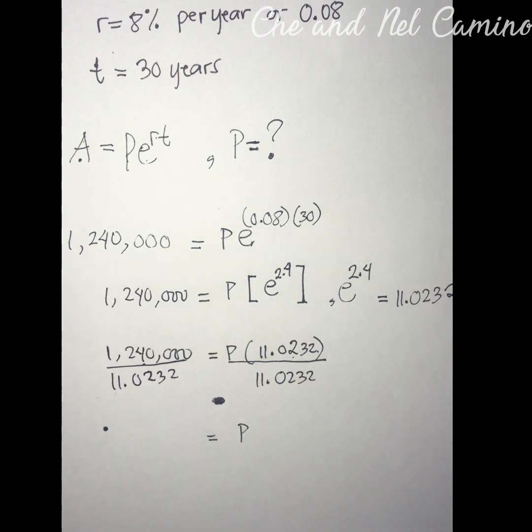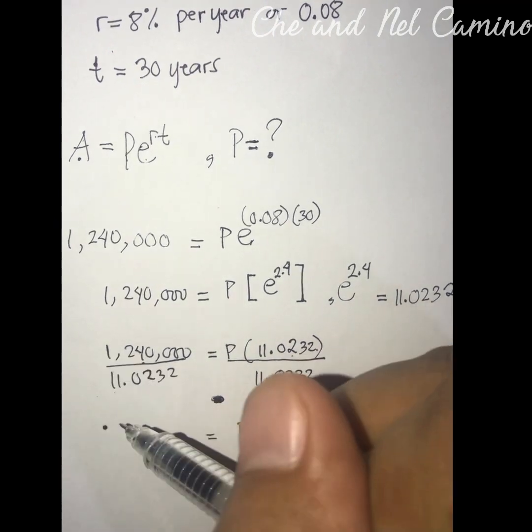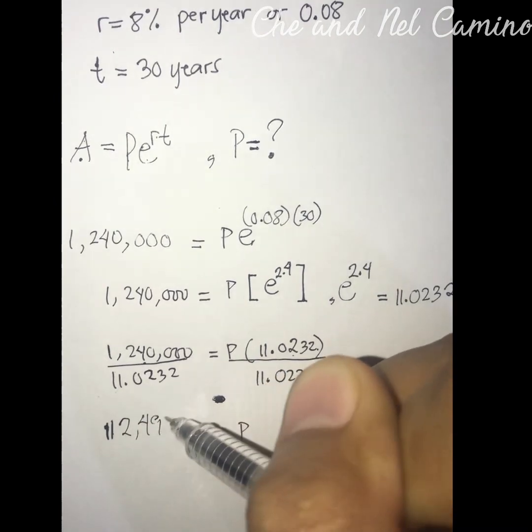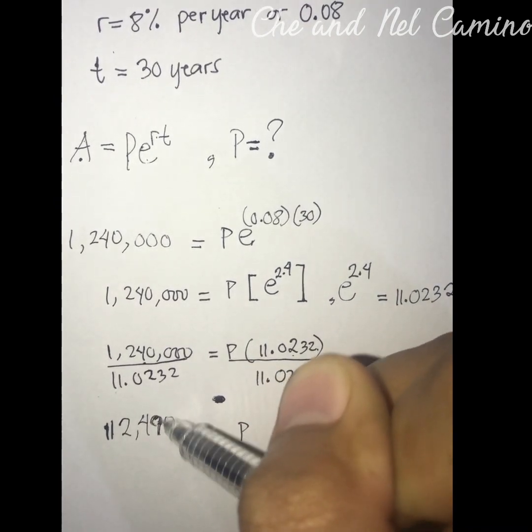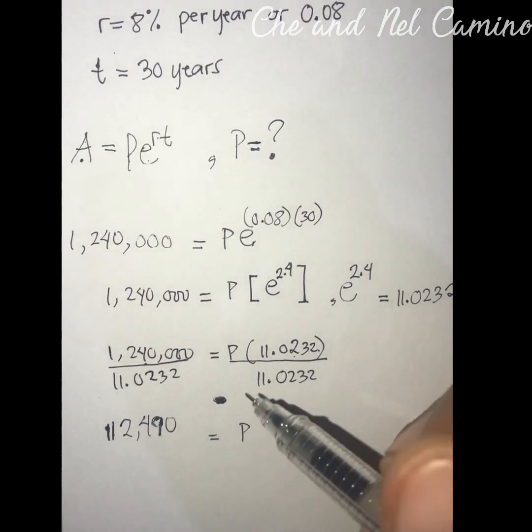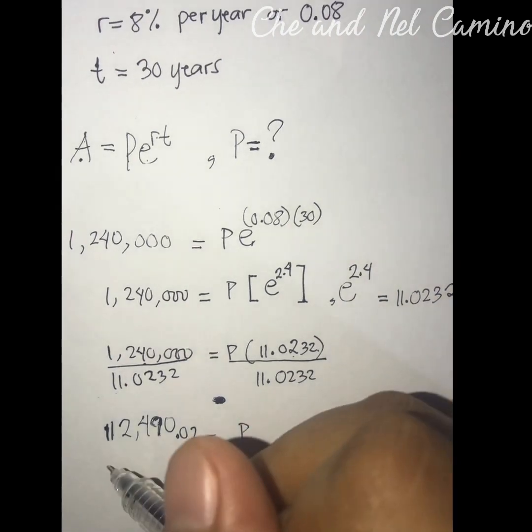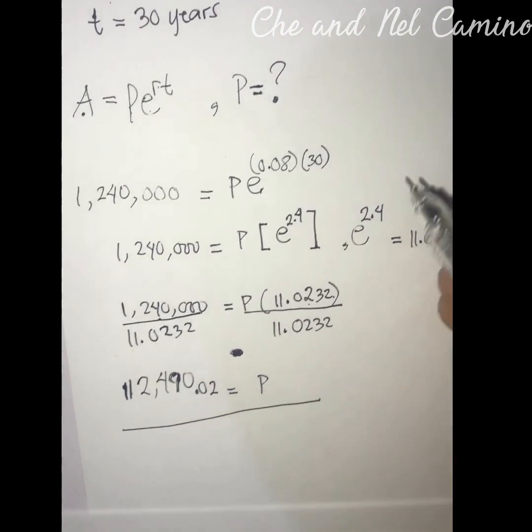So the result is 112,490.02. This is the value of P.